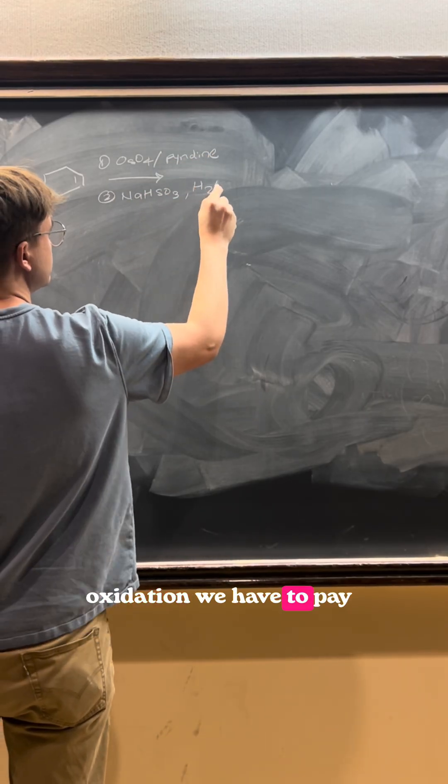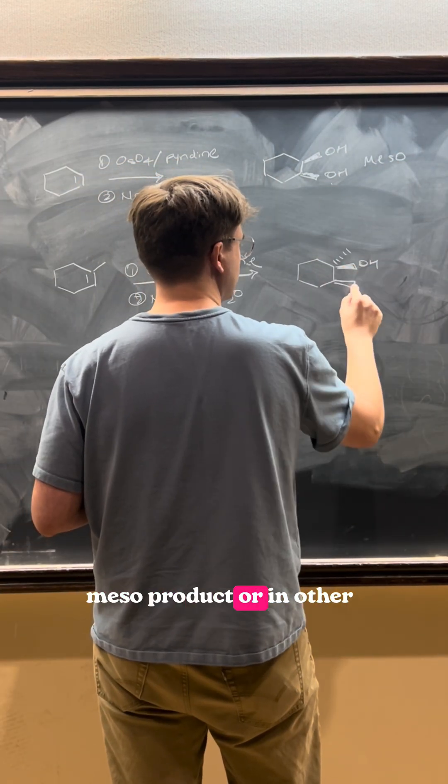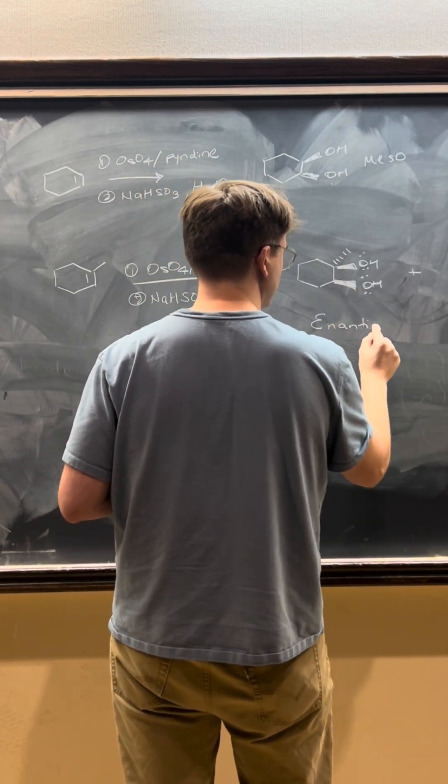And just as with epoxidation, we have to pay attention to our products because there's always the possibility of forming a meso product or, in other cases, forming enantiomeric pairs.